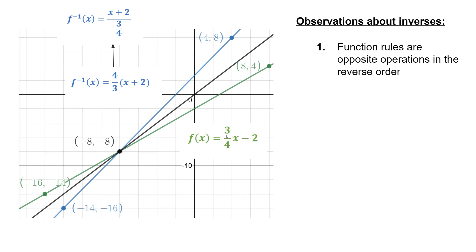So we went from first multiplying and then subtracting to, in the inverse, adding and then dividing. So not only are the operations opposite, but the order is being reversed. And dividing by a fraction is the same as multiplying by the reciprocal. So that's why I have times 4 thirds, because dividing by 3 fourths is the same as multiplying by 4 thirds. So this is just a more elegant way of writing that function, but this representation makes it more clear that they're opposite operations in the reverse order.